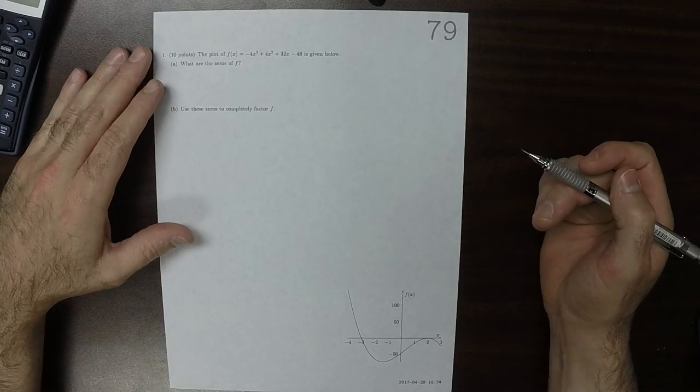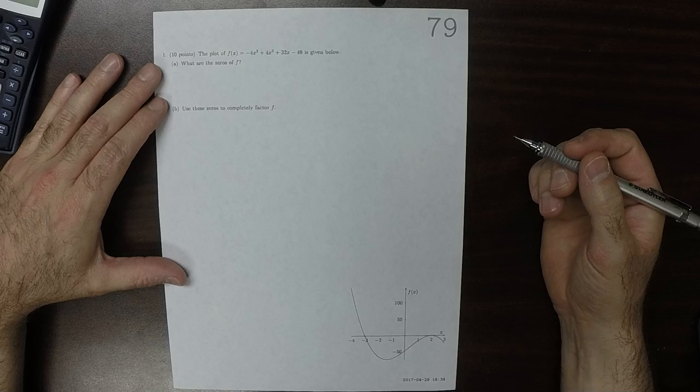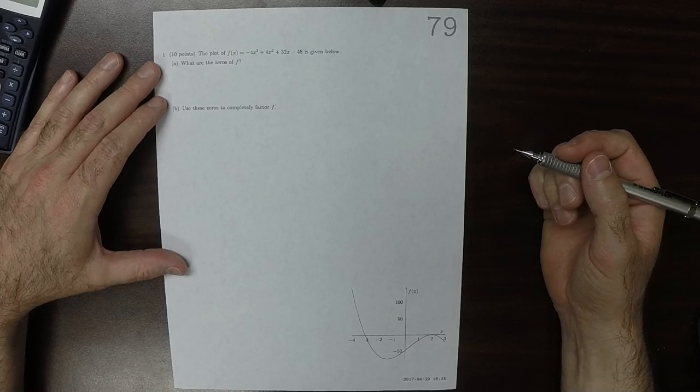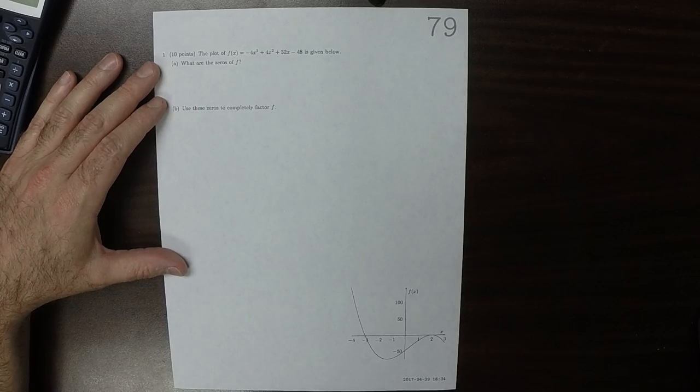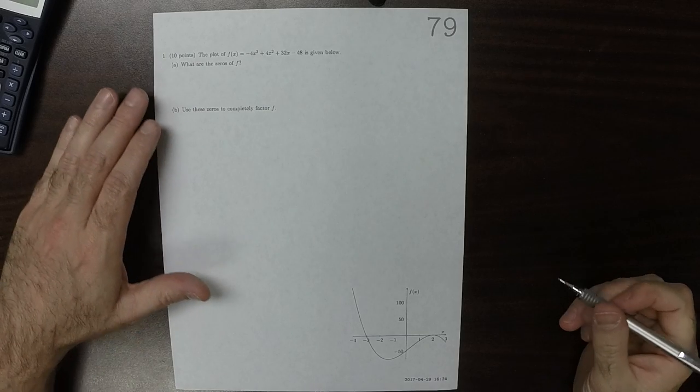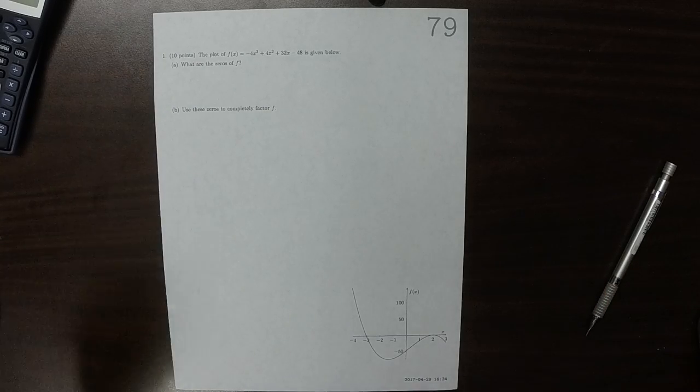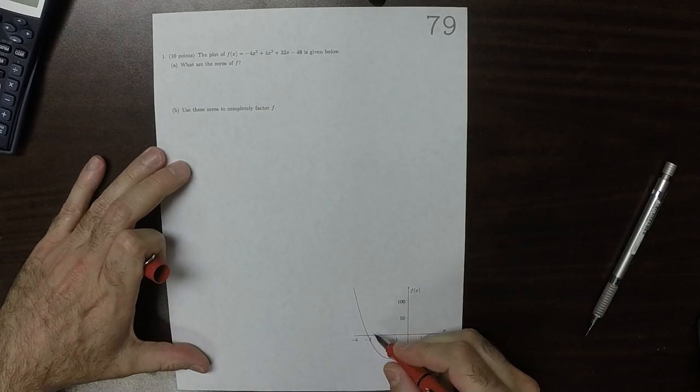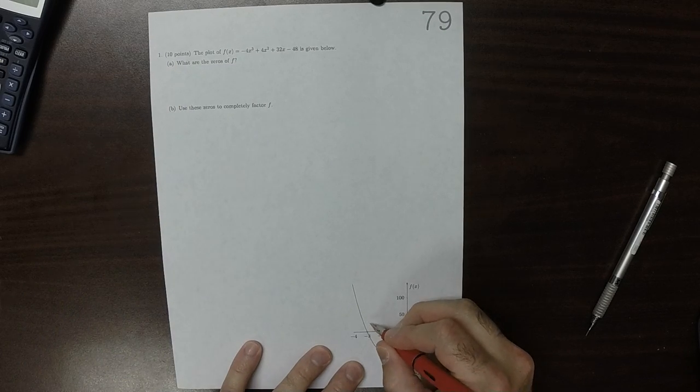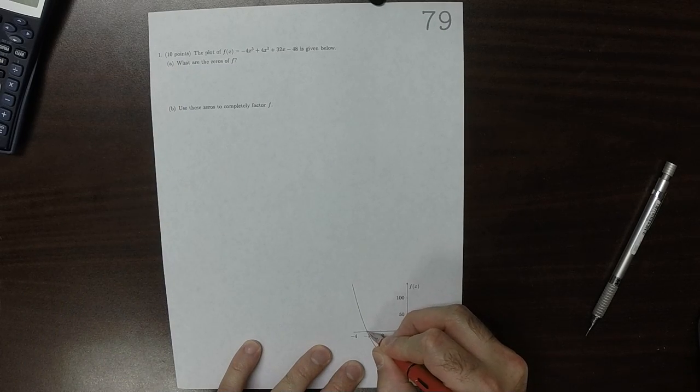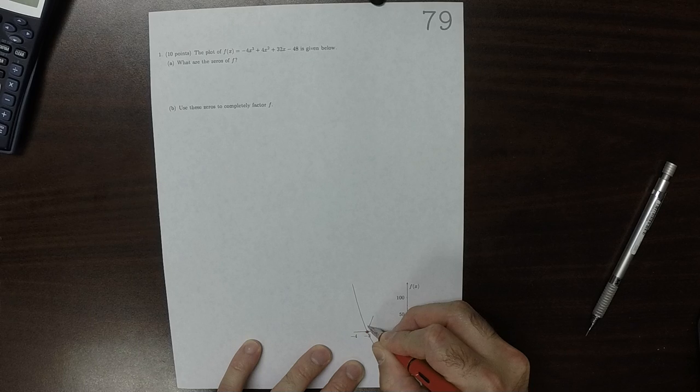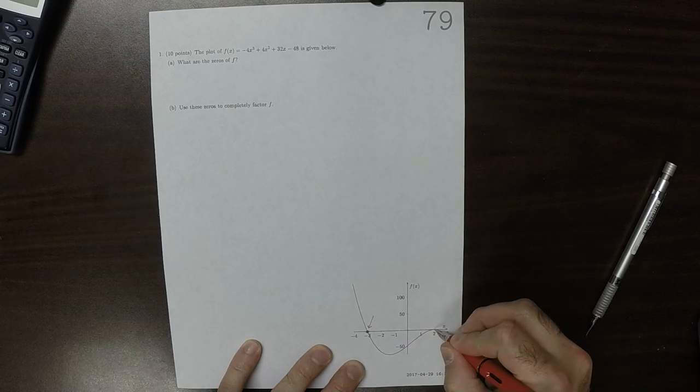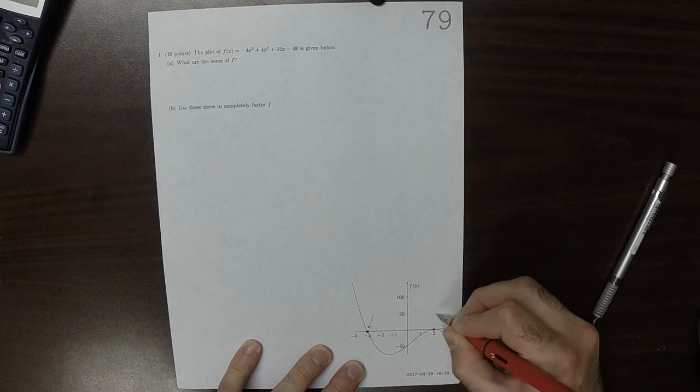This is the solution to written homework 79. What are the zeros of f? I can see from looking at this plot that here's a zero and here's another zero.